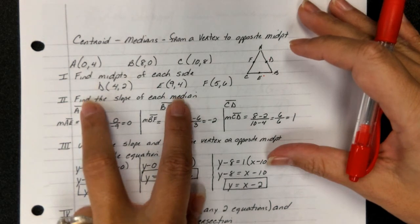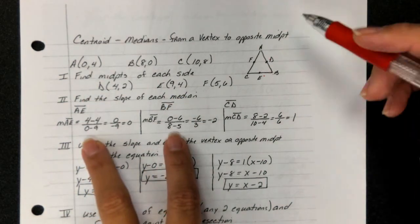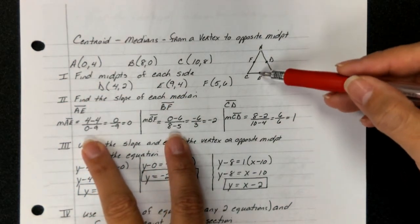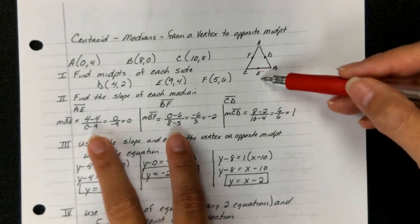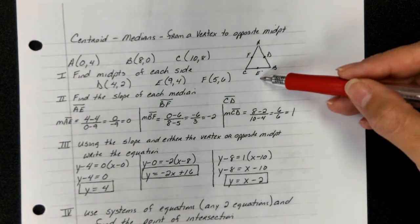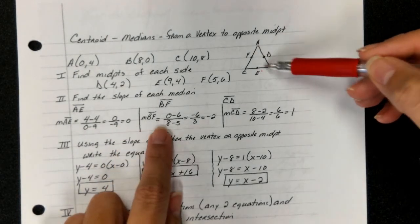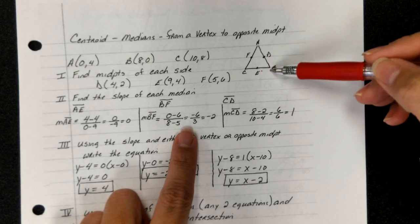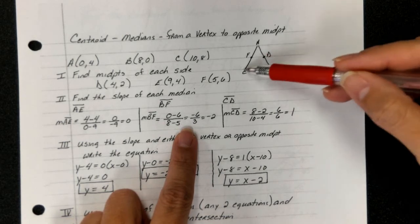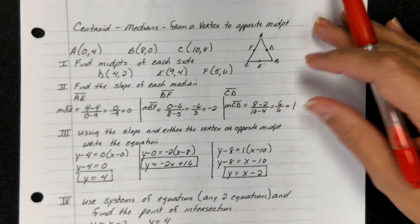Second step, find the slope, just like before. But this time guys, we're going to find the slope of AE because we want the slope of our special line segment. So here we get a slope of 0, here we get a slope of negative 2, and here we get a slope of positive 1.